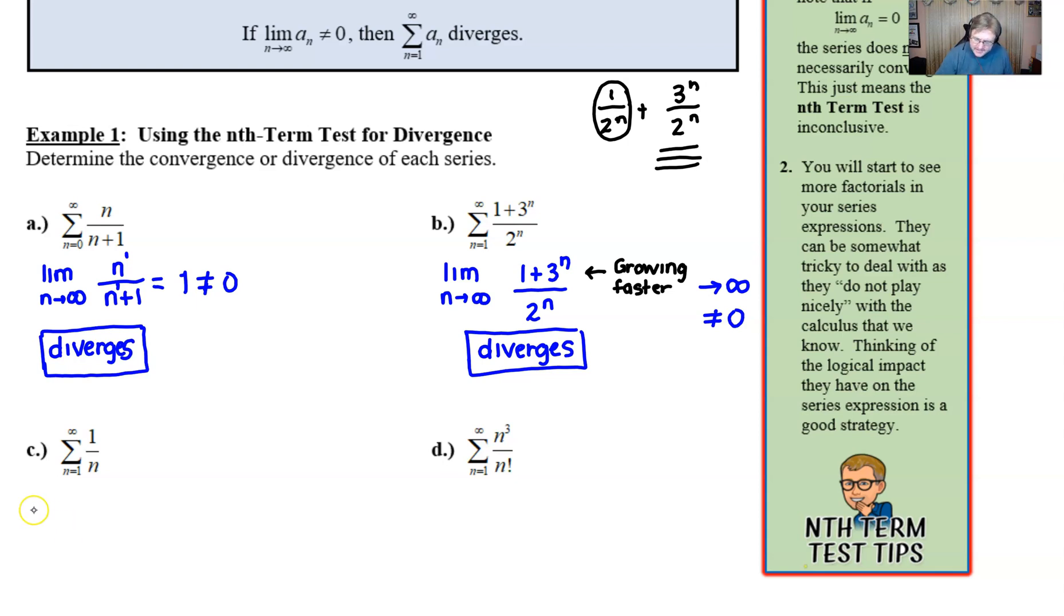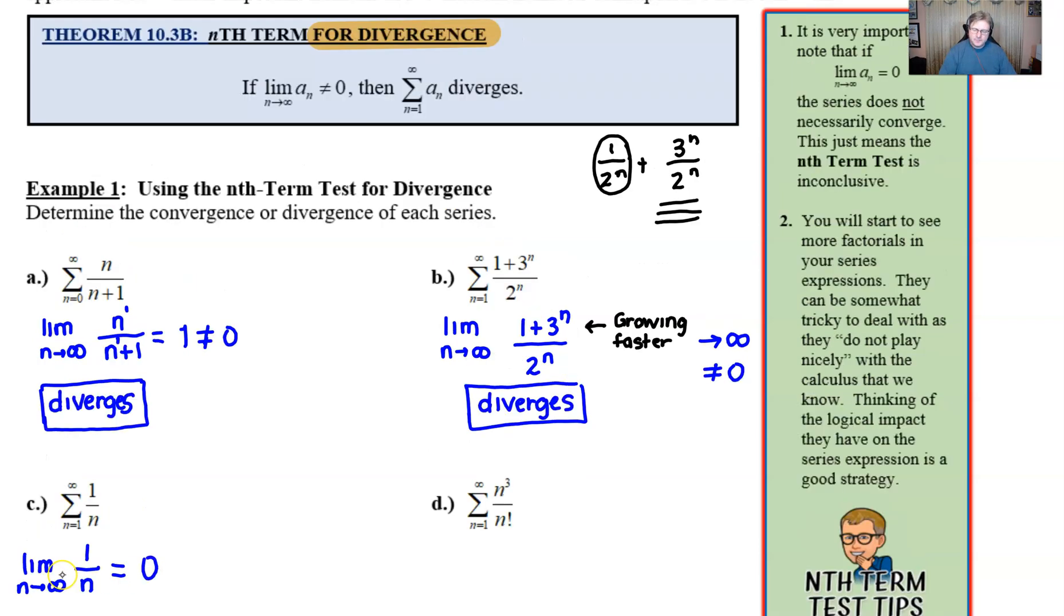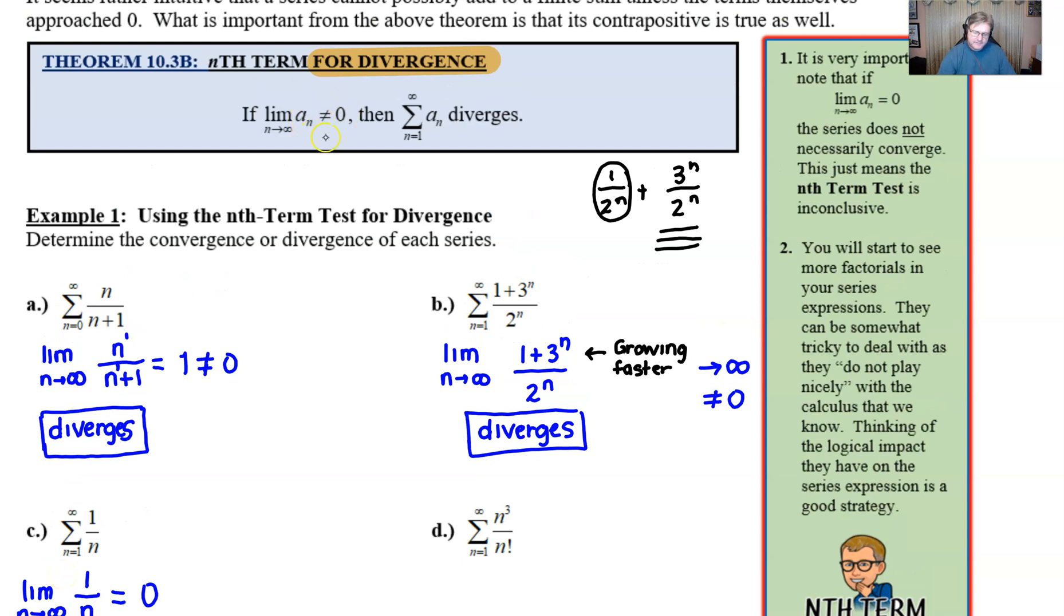Let's take a look at part C. Once again, you go right after the limit as n approaches infinity of one over n. Now it's pretty clear as n gets really big, this is going to give you zero. It's pretty obvious. So for the first time, we got this thing that we didn't really want to get. Now here's where you've got to be careful. It's very easy to want to write the word converge. Because we just assume that if the opposite of this is true, then we just take the opposite of that word. But that is not what this theorem says.